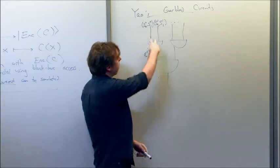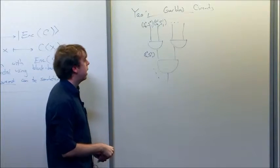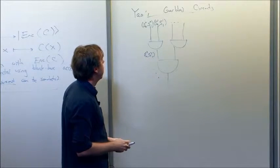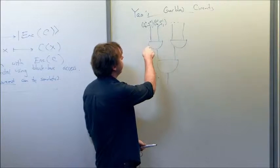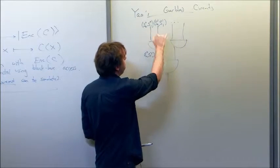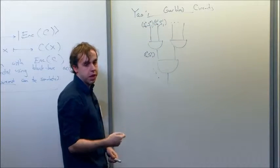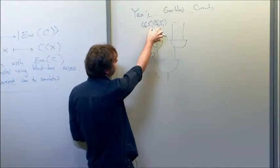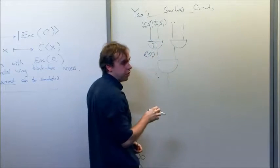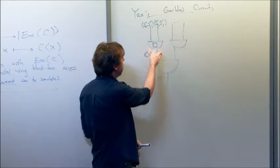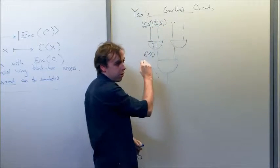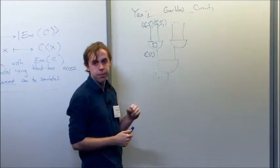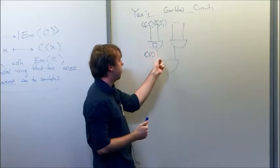In a garbled circuit, for every wire there's a pair of secrets — one secret corresponds to 0, one corresponds to 1. I don't distribute those secrets with the garbled circuit directly. The way a garbled circuit is used is I provide to the user exactly one of each pair of secrets corresponding to the input on which they want to evaluate the circuit. I provide for each gate some data which allows you to take the secrets associated to the input wires and produce the secret associated to the output wire. So if this is supposed to be an AND gate, if you have the two secrets corresponding to 1 on the input wires, you can use those with the data I supplied to extract the secret corresponding to 1 on the output wire.